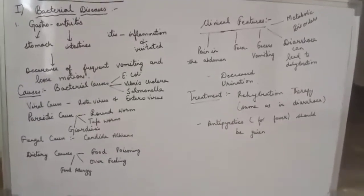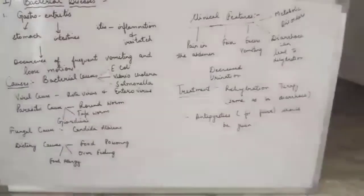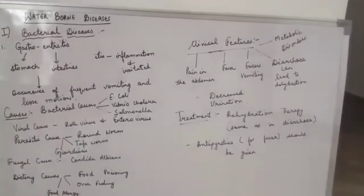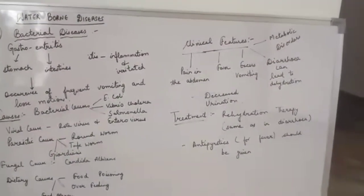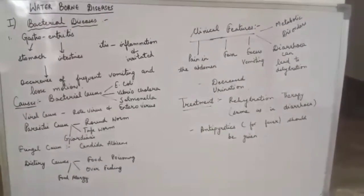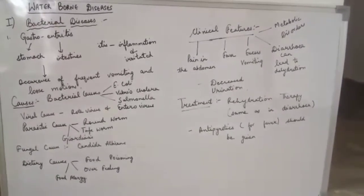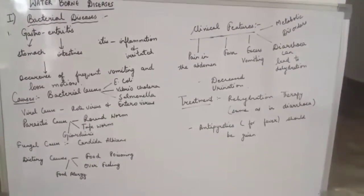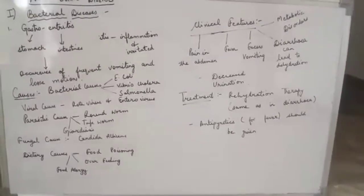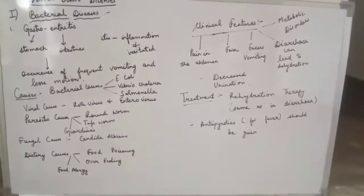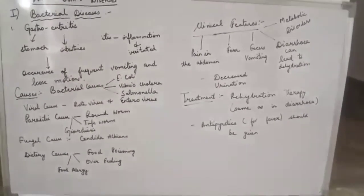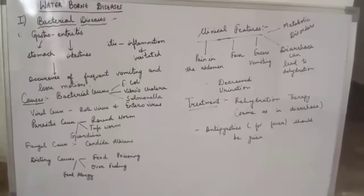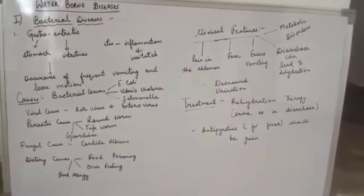The clinical features of gastroenteritis are pain in the abdomen, fever, excess vomiting, and diarrhea, which can lead to dehydration, metabolic disorders, and decreased urination.